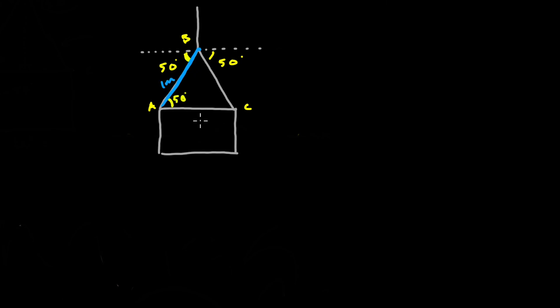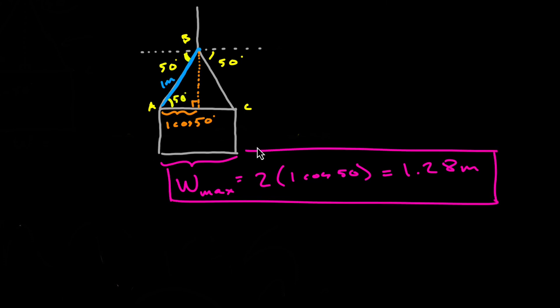Now again we were asked for the maximum width of the box before cable ABC snaps which is equal to 1.28 meters. So again if the box gets any wider than 1.28 meters this angle up here alpha will drop below 50 degrees just due to the geometry and we already found out that if this angle gets any less than 50 degrees the tension in cable ABC will exceed the maximum 3.2 kilonewtons. So this is our final answer here and we have answered the original question.